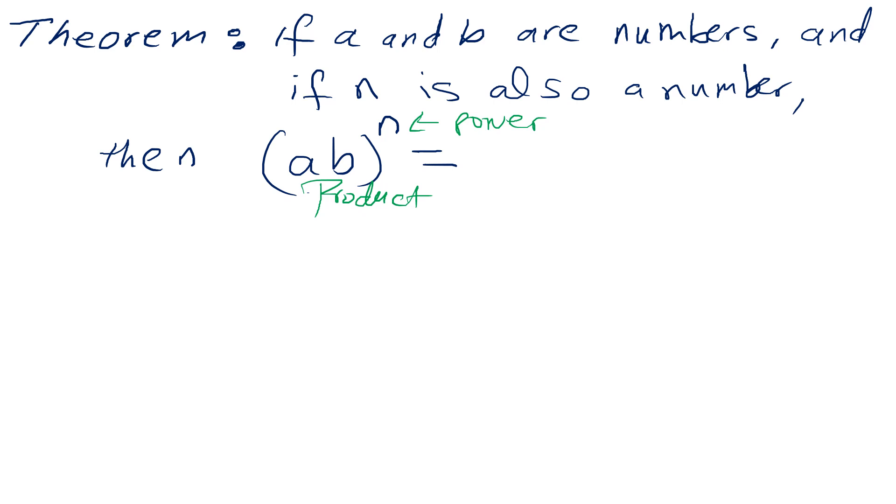To avoid the confusion with the binomial square, for example, or cubed or to power n, the theorem states that (ab)^n equals a^n times b^n. And for the quotient, if you have this one, usually it doesn't get confused as the first one. It becomes a^n over b^n.